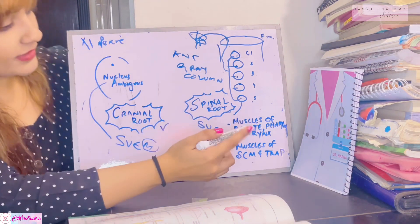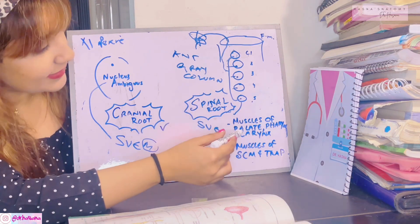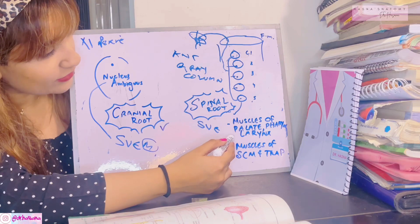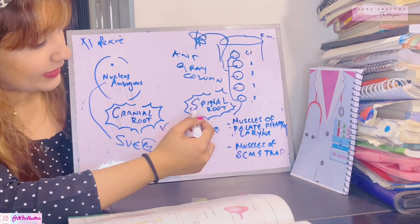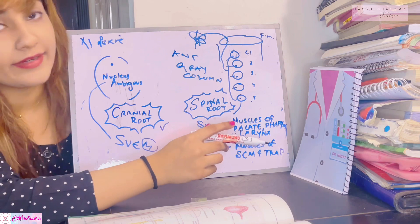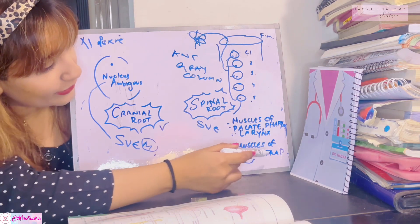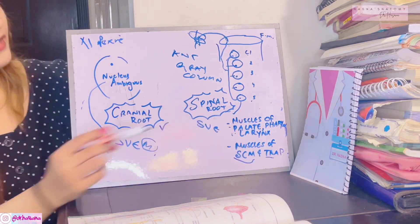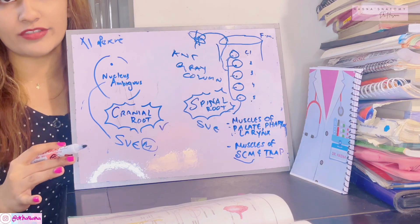Now they supply the muscles. The cranial root supplies the muscles of the palate, pharynx, and larynx, whereas the spinal root supplies the neck muscles — specifically the sternocleidomastoid and trapezius. Let's now move on to the extracranial course.